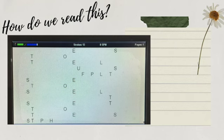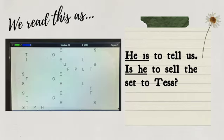So here, how do we read this? I bet you already know how to read stenograph notes, so I'm giving you enough time — there are two sentences, that's a clue. Now let's check if you got the correct answer. The correct answer: the first sentence is 'he is to tell us', period. Second sentence: 'Is he to sell the set to test?', question mark. Isn't it easy? It may seem complicated, but when you know how to read it correctly, then it's very easy indeed. Congratulations!